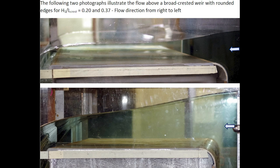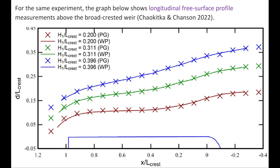These two photographs illustrate the flow above a broad-crested weir for a small discharge and a larger flow rate. For the same experiment, the following graph illustrates the longitudinal surface profiles above the broad-crested weir. These are physical measurements.